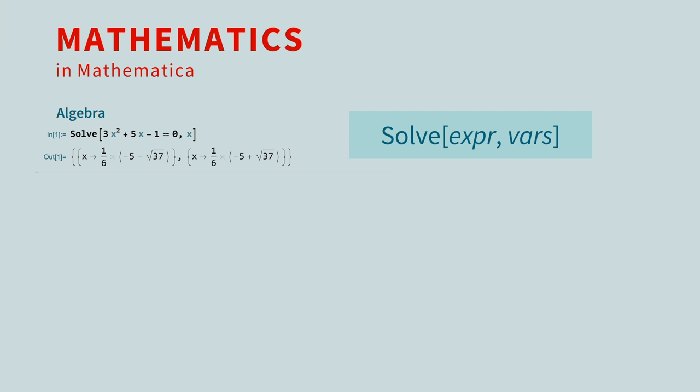The output may look different than you expect. This is because Mathematica returns the solutions as a list of substitution rules, which are ready for more computation work. We'll explore the advantage of this in future lessons.